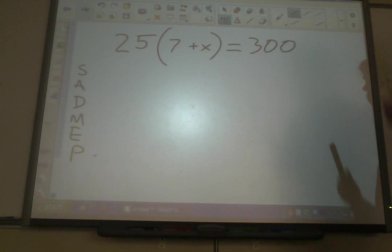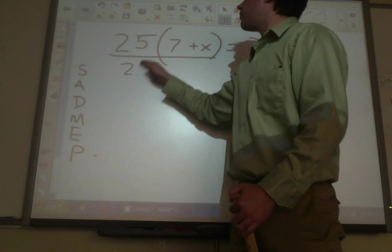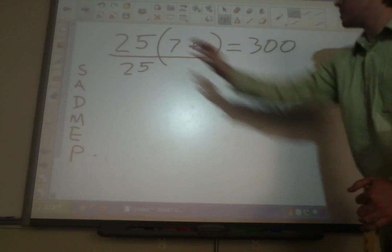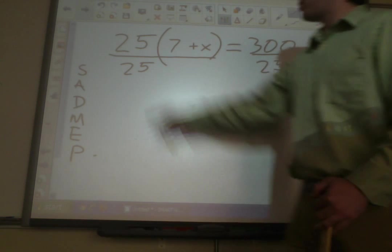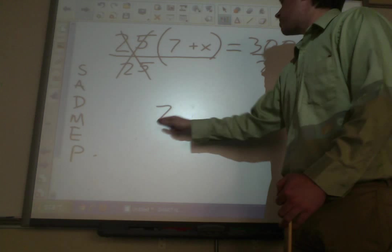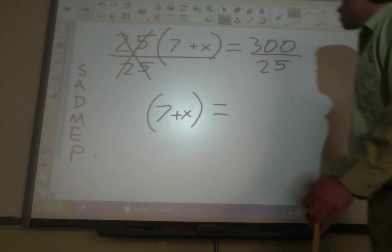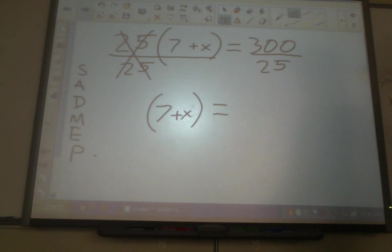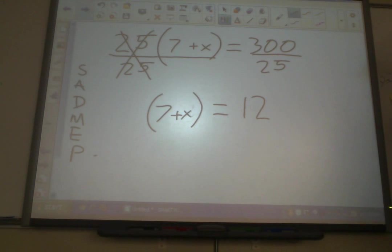So in order to get rid of it, we are going to have to divide. So we're going to divide by 25 over here. And if we do it to this side, we've got to do the same thing over here, divide by 25. All right, 25 divided by 25 makes this go away. And we're left with 7 plus x equals 25 is going to go into 3 12 times.